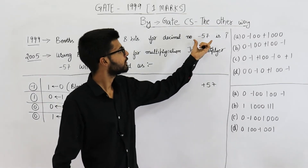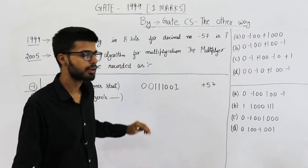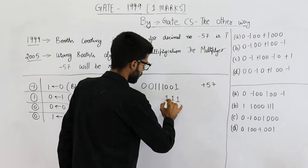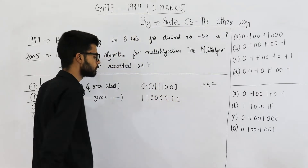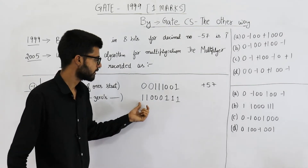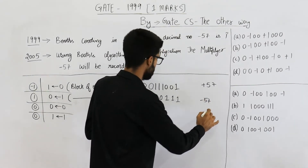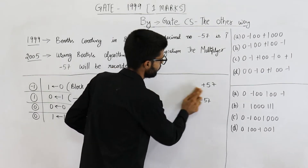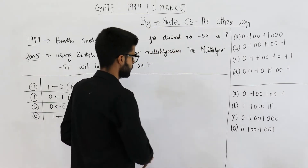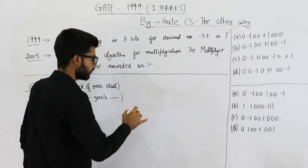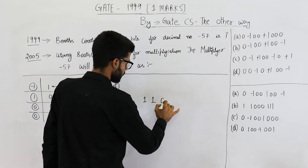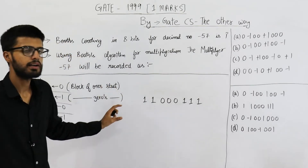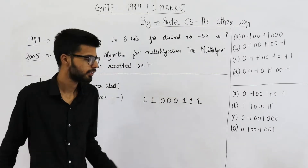Now we want the 2's complement representation of minus 57. For that, just take the 2's complement of this pattern. It is 1, 1, 1, triple 0, double 1. So minus 57 will be represented as: double 1, triple 0, triple 1. Just keep this pattern in mind. So minus 57 is: double 1, triple 0, triple 1.